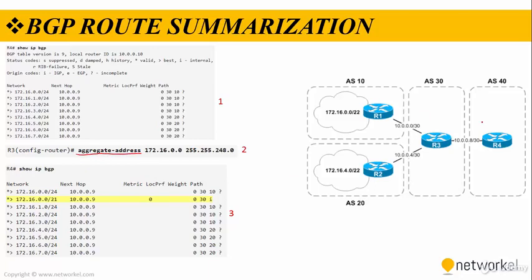Here is our topology. We have four routers. In router 4, we type show IP BGP and we see the routes from 0 to 7. Then in router 3, if we want to use summarization, we use the aggregate address command with the IP address and subnet mask.